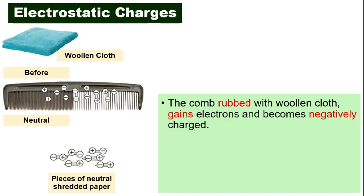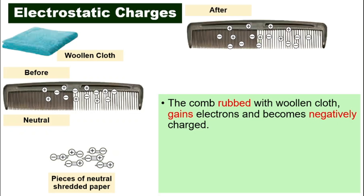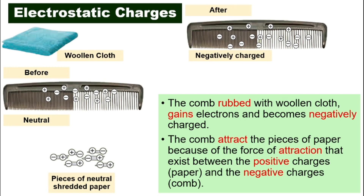When two objects rub together, electrons can move. In this case, electrons move from the woolen cloth into the comb. The comb receives electrons, which means the comb has become negatively charged. If we bring the comb close to the shredded paper, the paper will be attracted to the comb — it's as if magic happened, the paper suddenly gets picked up by the comb on its own.